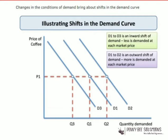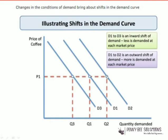If you consider D1 to be your actual demand curve, when the curve shifts from D1 to D2 we call it an outward shift — a right-side shift, because it's shifting to the right of the existing demand curve. An outward shift means that demand has increased.